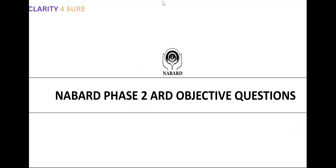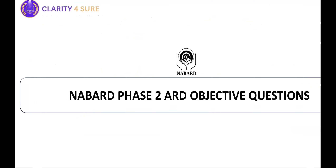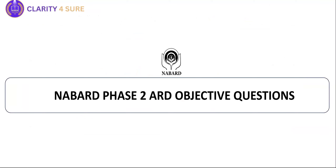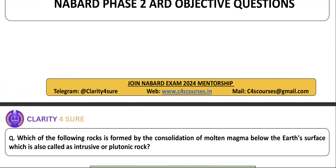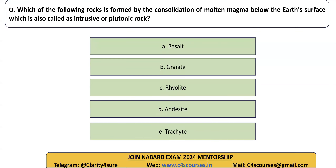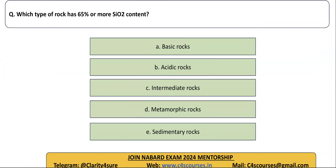Now we will move on to the objective portion. First question: which of the following rock is formed by consolidation of molten magma below the earth's surface? The answer is igneous rocks — an example being granite. Next question: which type of rock has 65% or more SiO2? Wherever silicon oxide appears, it is talking about acidity — so the right answer is acidic rock.